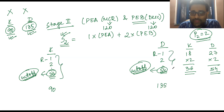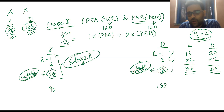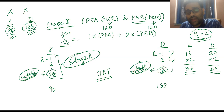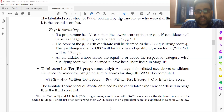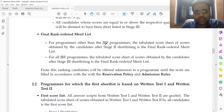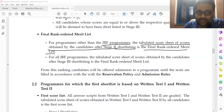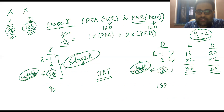Each and every examination except JRF finishes at stage 2 — there will be no interviews except for JRF. Stage 3 or the third score list is only for JRF programs. For programs other than JRF, the tabulated score sheet of scores obtained by candidates after stage 2 is the final rank-ordered merit list. So the 36th for ISI Kolkata and the 54th for ISI Delhi represent the final merit list cutoffs.